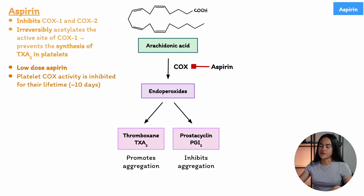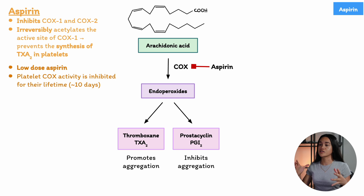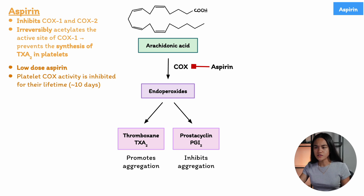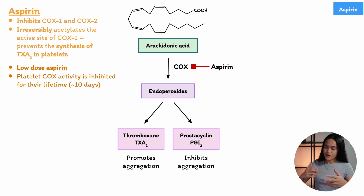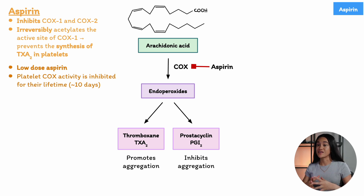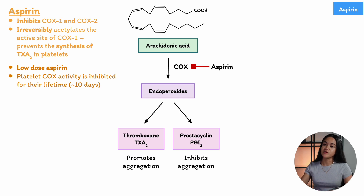It's important to know that platelets are not typical cells. They are fragments of larger cells called megakaryocytes, and they lack a nucleus. Because of this, platelets can't produce new proteins, including cyclooxygenase. So when aspirin irreversibly inhibits COX-1 in platelets, the inhibition lasts for the entire lifespan of the platelet, which is about 7 to 10 days. Since aspirin is an irreversible inhibitor, the COX-1 inhibition persists for the full life of the platelet.